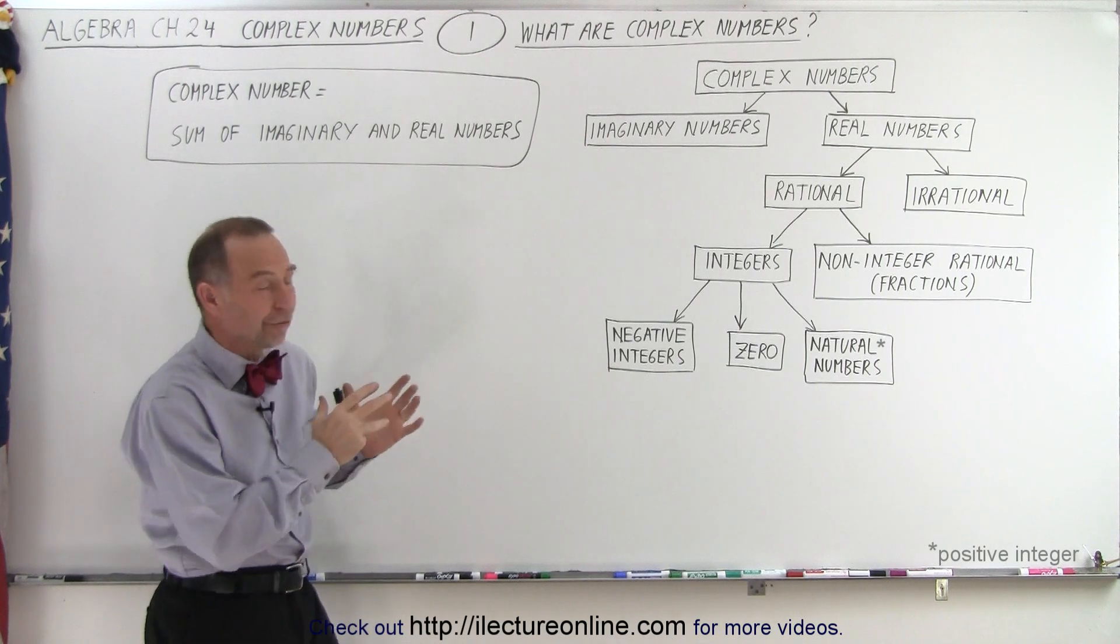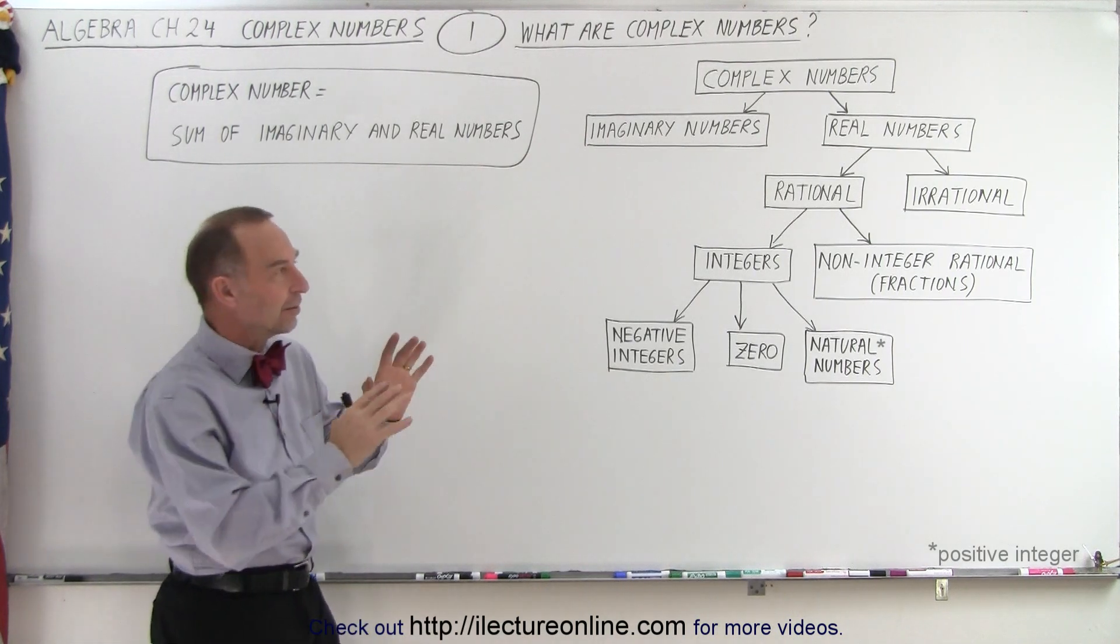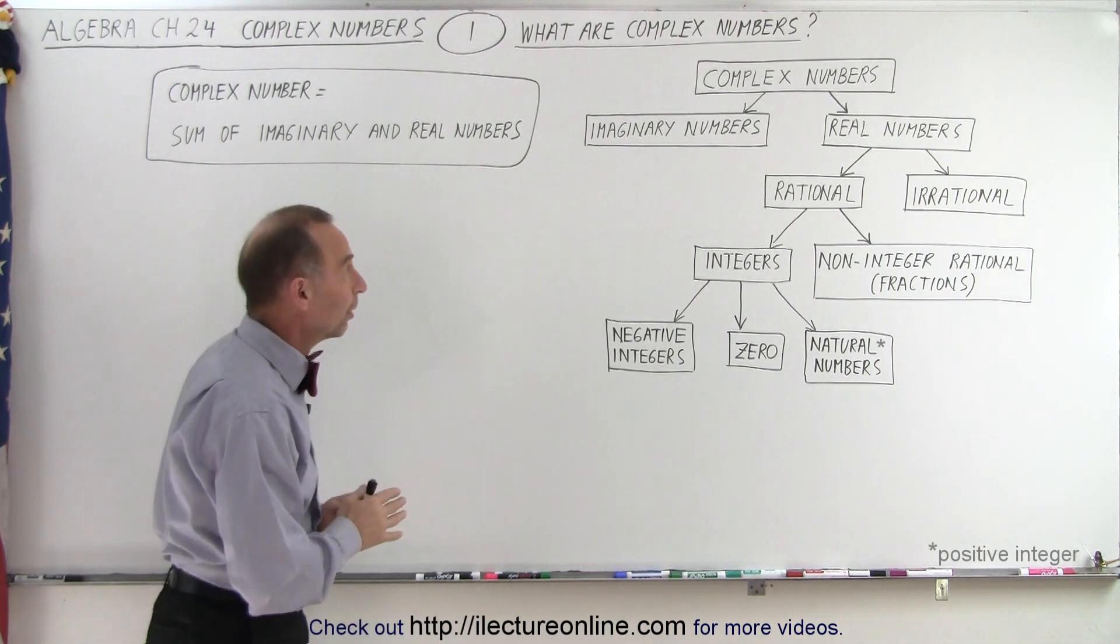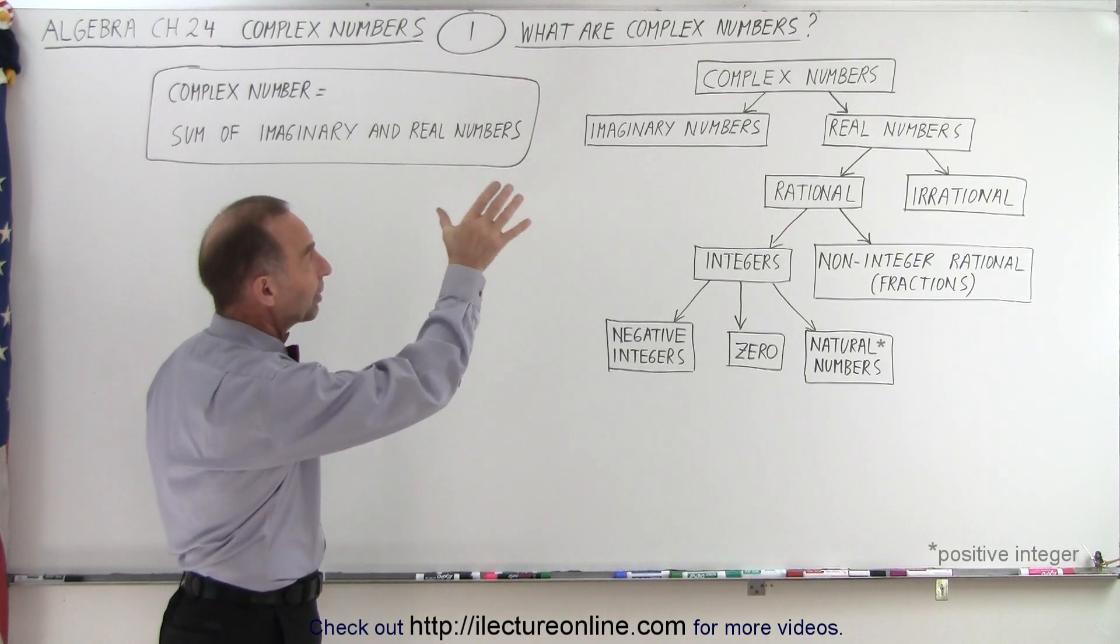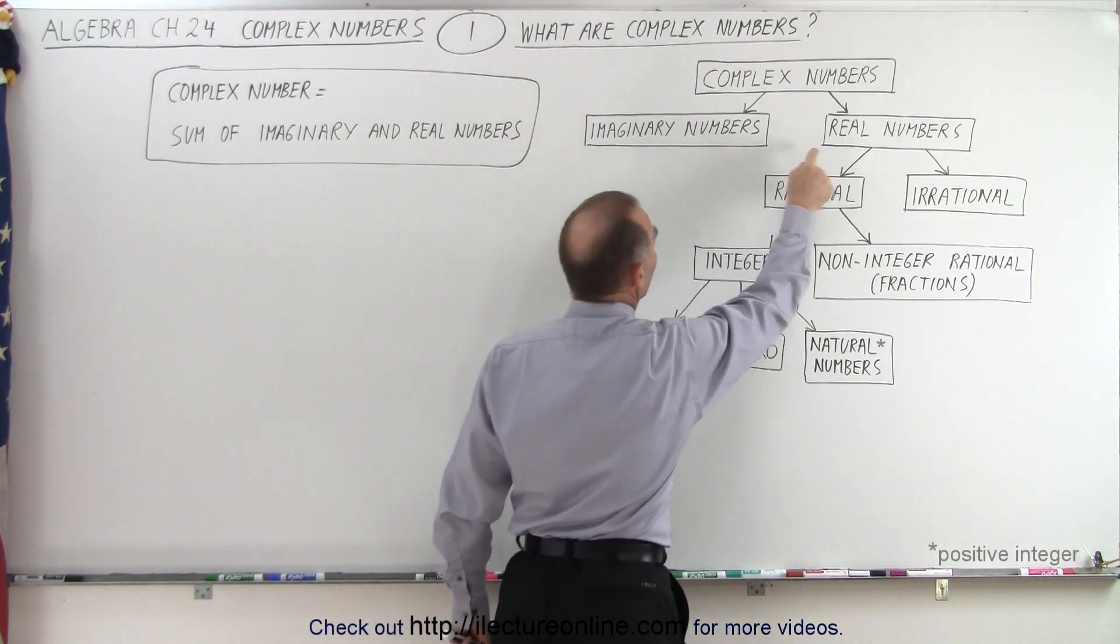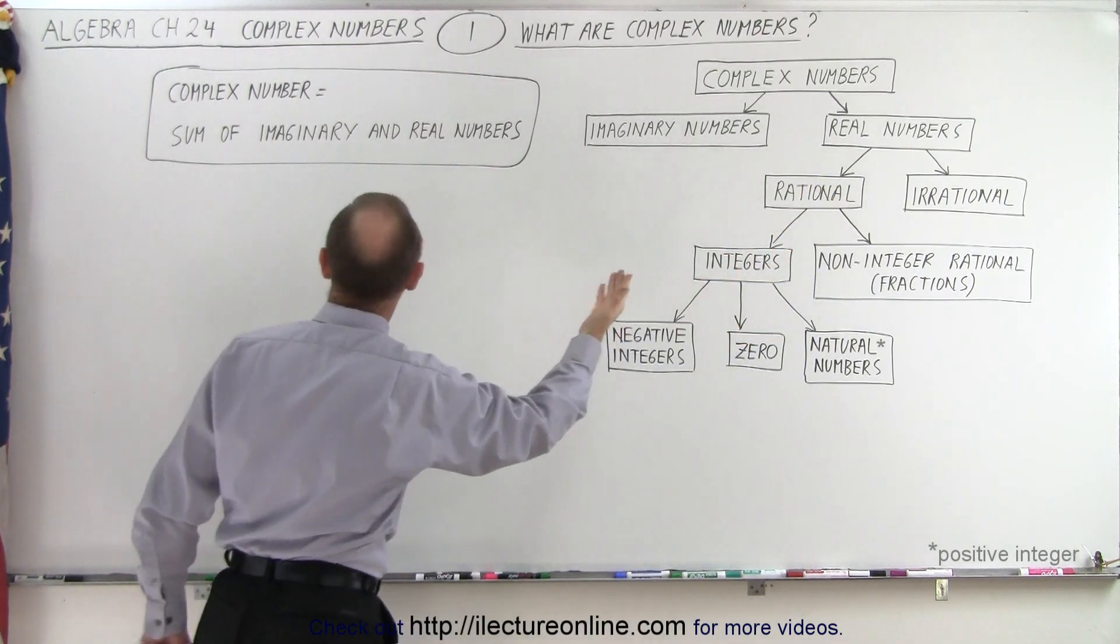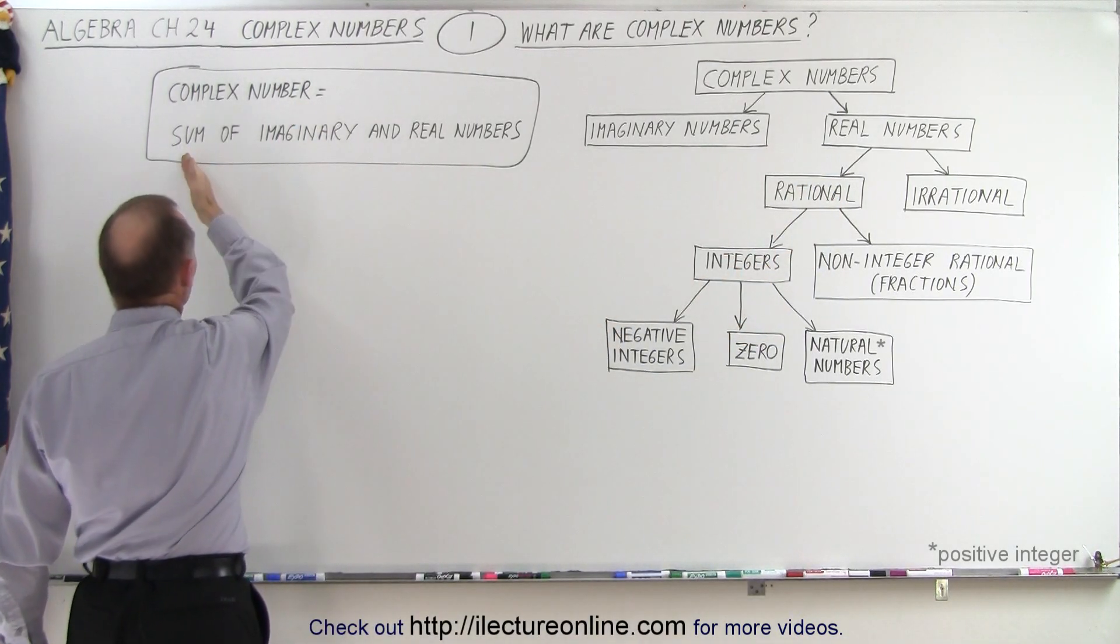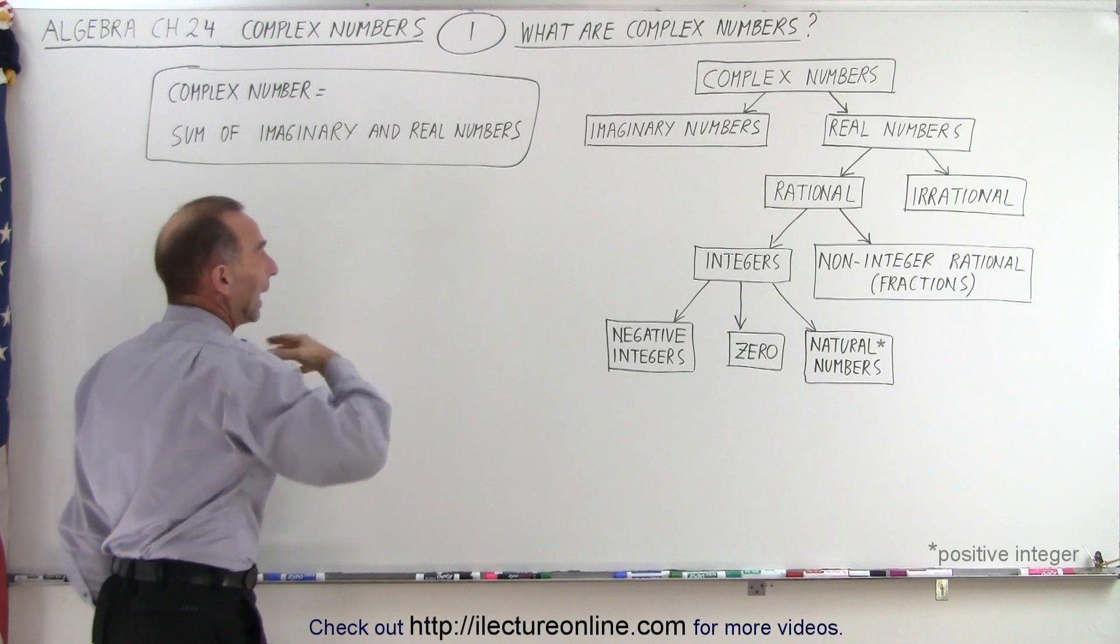One way to get a feel for it is to put it in context with everything else that we know so far. Here you can see that complex numbers consist of both imaginary numbers and real numbers. In essence, by definition, a complex number is the sum of an imaginary number and a real number.